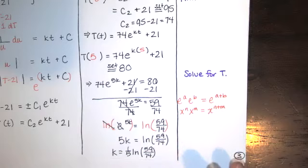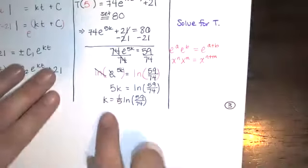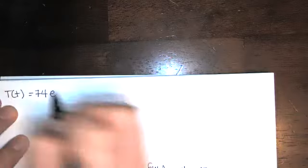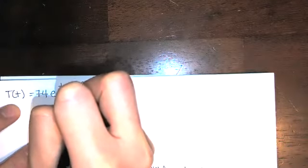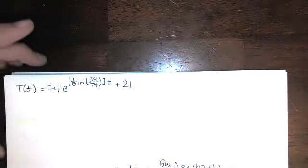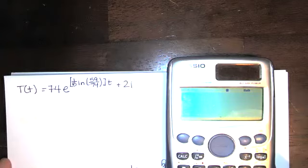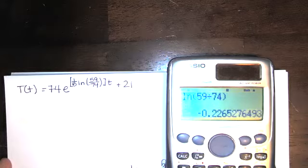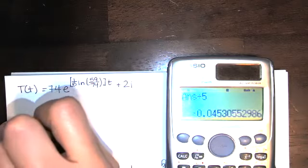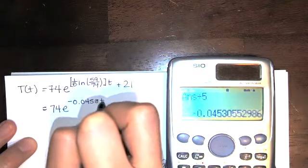We're not finished until we state the coffee's temperature as a function of time. We have T(t) = 74 e^(kt) + 21, where k = (1/5) ln(59/74) multiplied by t. If you want, you can approximate k: ln(59/74) divided by 5 gives approximately −0.0453. So T(t) ≈ 74 e^(−0.0453t) + 21. Now we can find the temperature at any time.